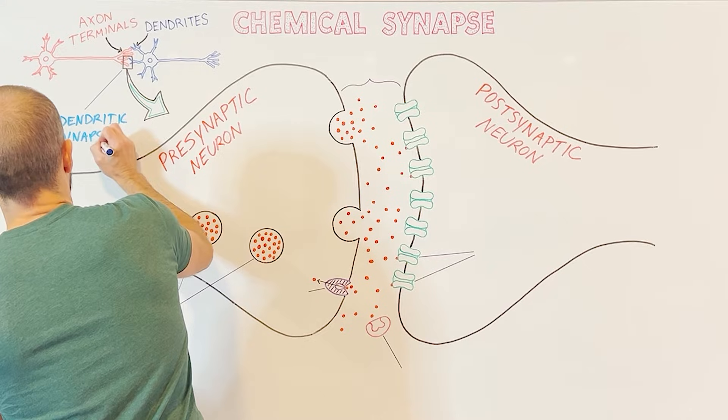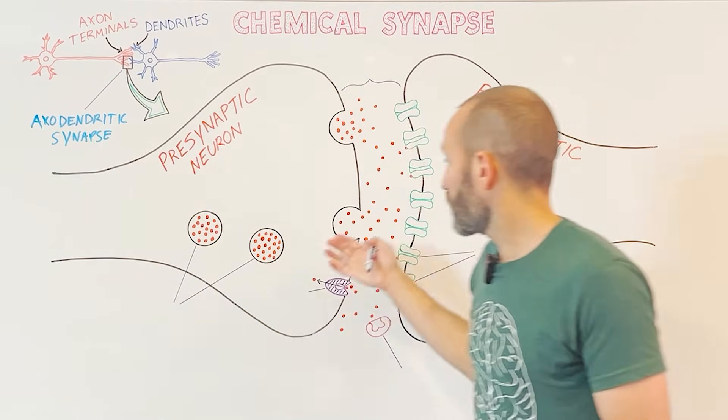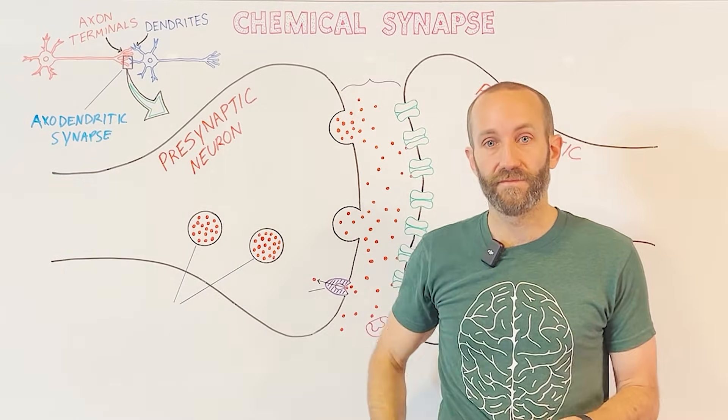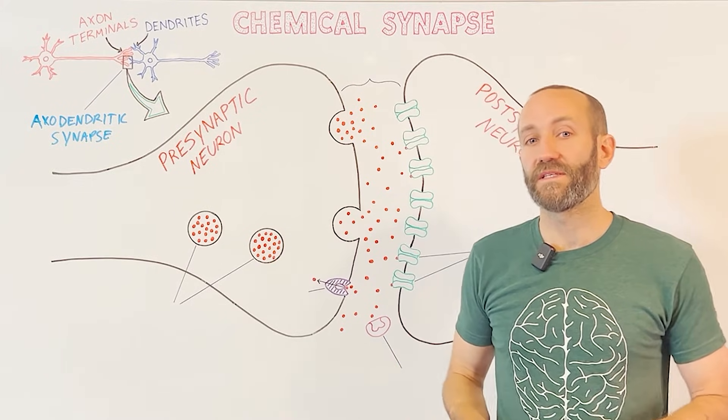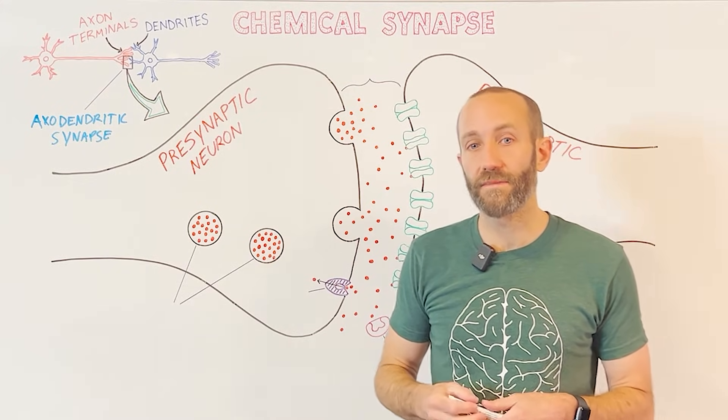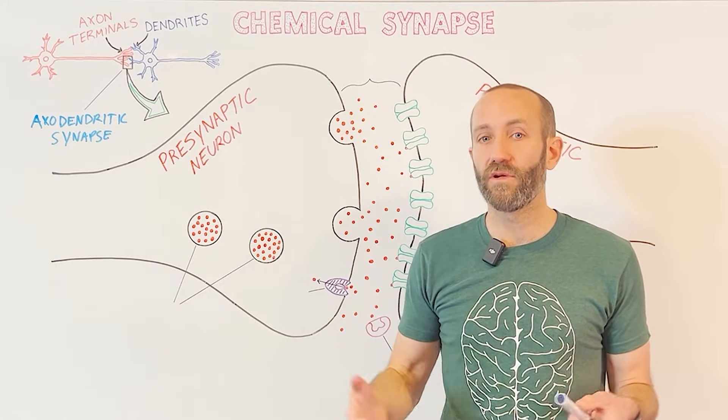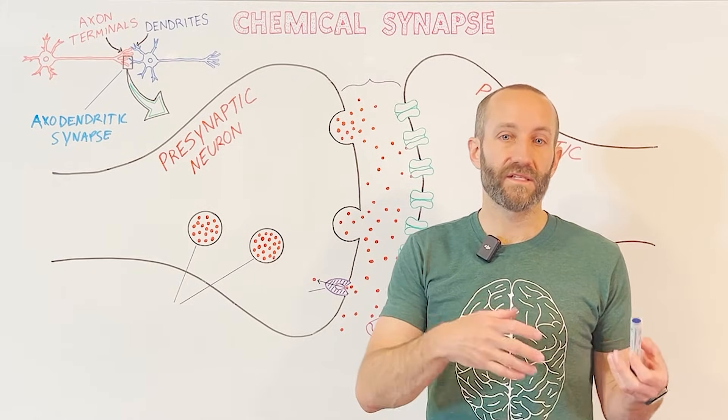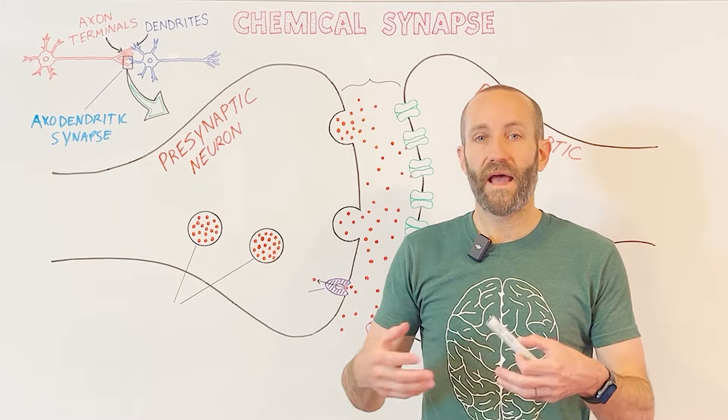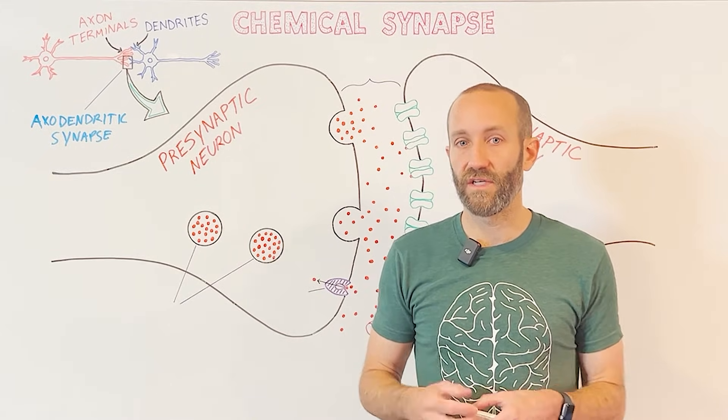So that's what we have right here as an axodendritic synapse, and then this is a close-up of an axodendritic synapse. We'll use an axodendritic synapse as an example because they're the most common type of synapse. But it's important to note that synapses can actually form between any two components of a neuron, such as between the axon terminals and dendrites, axon terminals and cell bodies, axon terminals and axons, or even dendrites and dendrites.